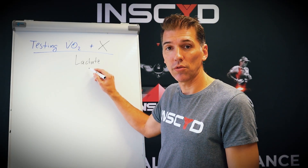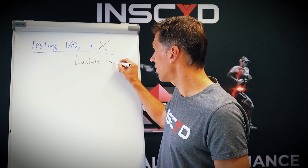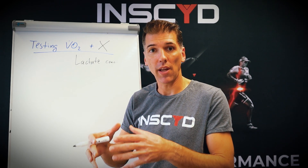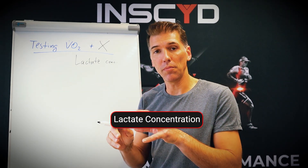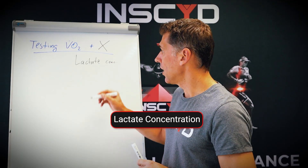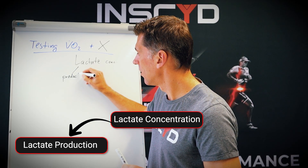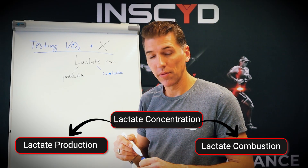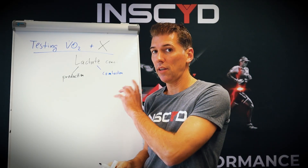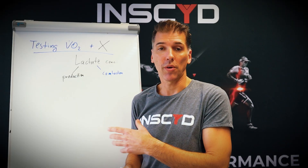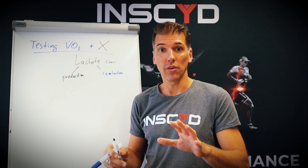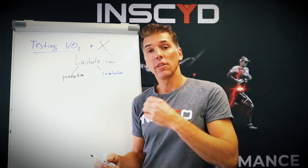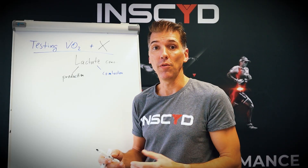I'm going to show you how combining lactate with your existing VO2 unlocks a whole new world of performance assessment. The lactate concentration that you measure is a result of two things: on the one hand, lactate production, and on the other hand, lactate combustion. Because one of these old outdated misconceptions is that lactate is not a waste product, and it's not produced because of a lack of oxygen. It is actually produced all the time, continuously. Lactate is produced in glycolysis and is combusted in aerobic metabolism — it is one of the best, most efficient, fastest available fuels for aerobic metabolism.